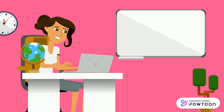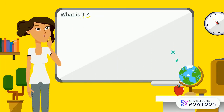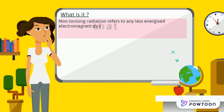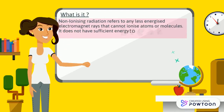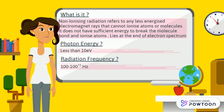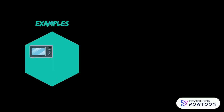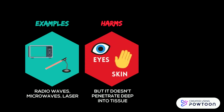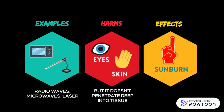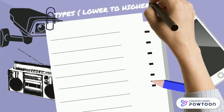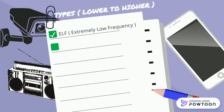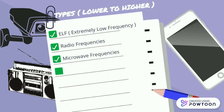Non-ionizing radiation refers to any less energized electromagnetic rays that cannot ionize atoms or molecules — it doesn't have sufficient energy to break the molecular bonds and ionize atoms. Examples of non-ionizing radiation are radio waves, microwaves, and laser. It might harm your eyes and skin — for example, sunburn. Non-ionizing radiation comes in the forms of extremely low frequency, radio and microwave frequency, laser, infrared, visible spectrum, and ultraviolet.